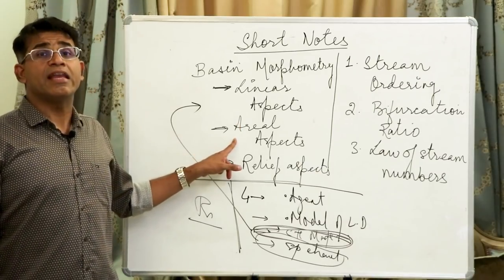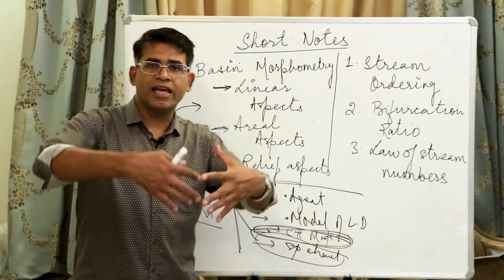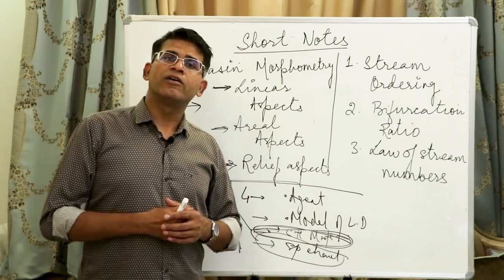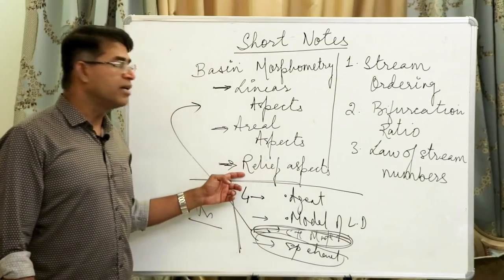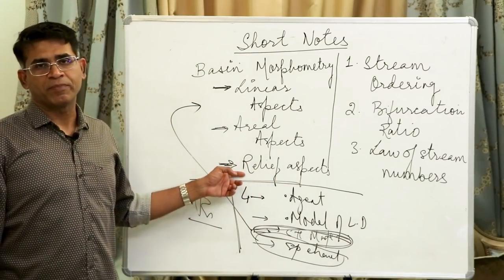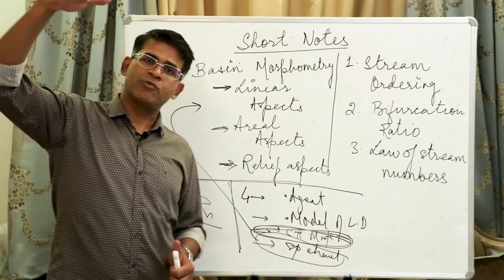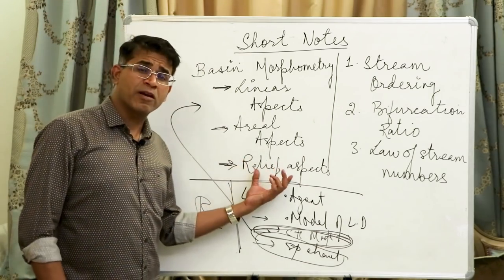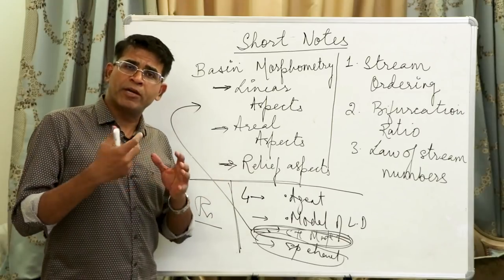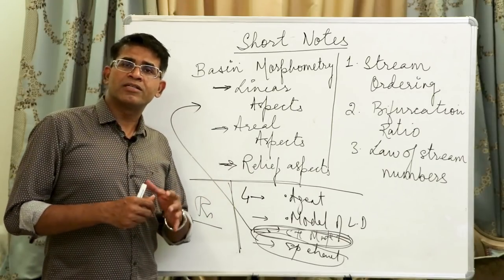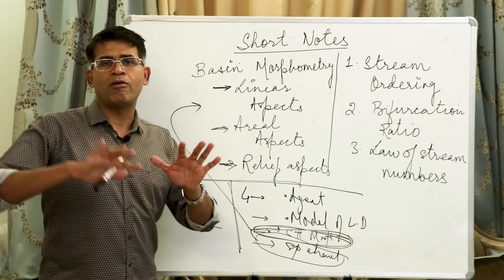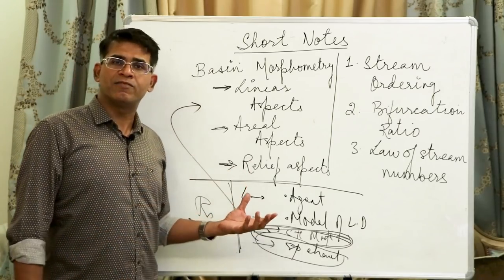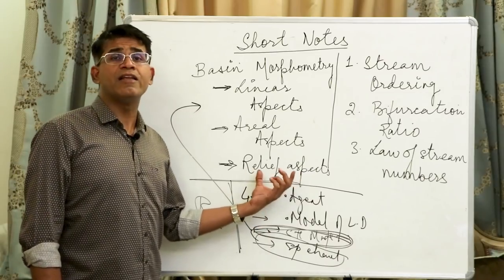Then we have the aerial aspects, where we study the area of the drainage basin — its size, its expanse, and what it comprises. Third is the relief aspect: the landscape with its elevations, depressions, valleys, and mountains. The relief aspect includes a lot of measurement and calculation, using statistical tools to plot altimetric height — concepts like hypsographic curves. These are relief aspects.